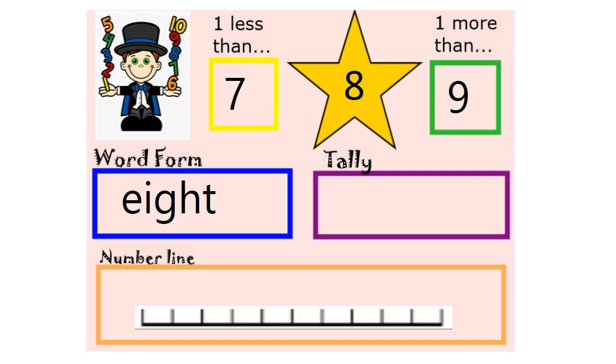We then do the tally just like on our weather tally charts. We might all count together: one, two, three, four, five, six, seven, eight. Fantastic! And then we have a number line.